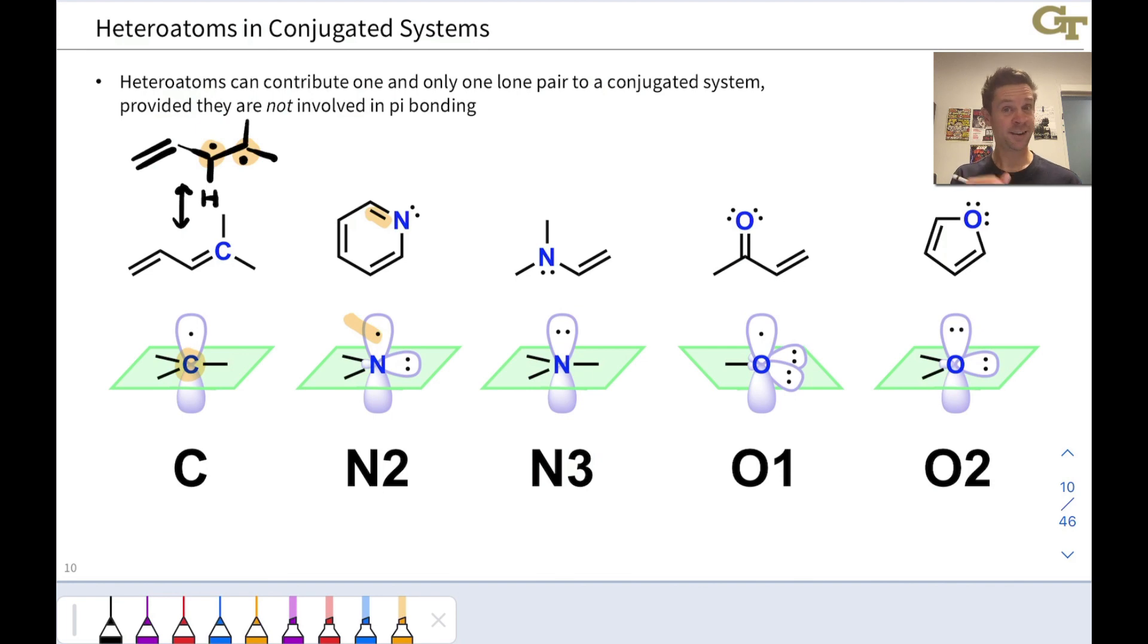And notice, the lone pair is in the sigma system. It's in the plane of the molecule, which is in green here. And so it's not participating in pi bonding, conjugation, delocalization, resonance. It's free to be donated, for example, is one way we'll think about this in the future. It's free to be given away to an electrophile or a Bronsted acid.